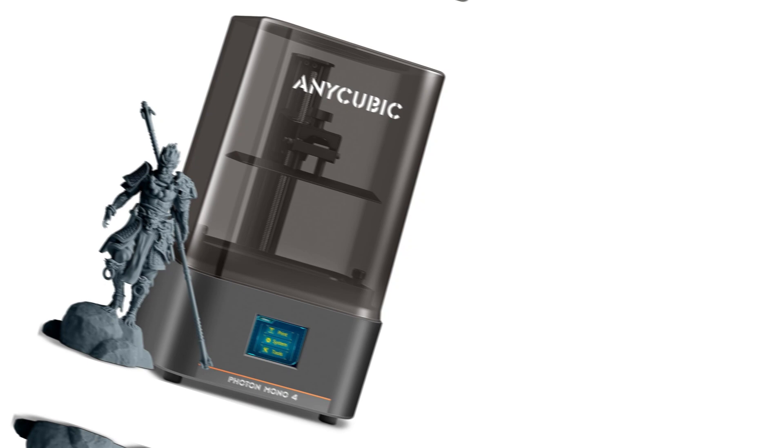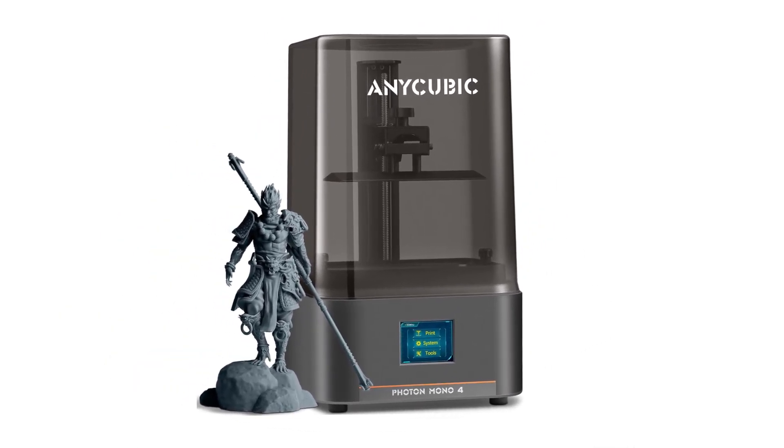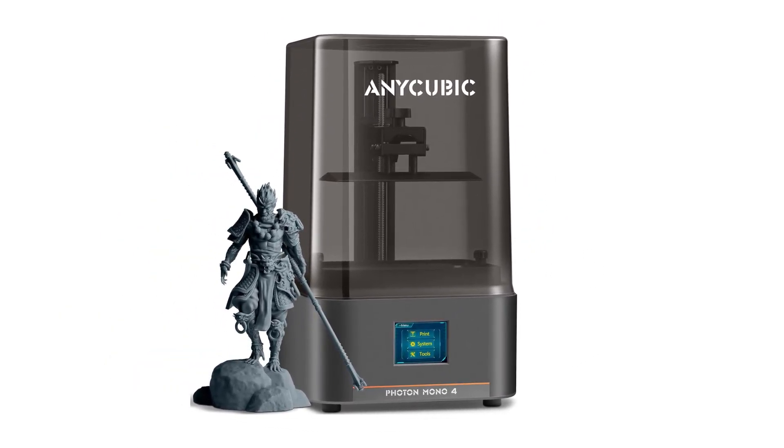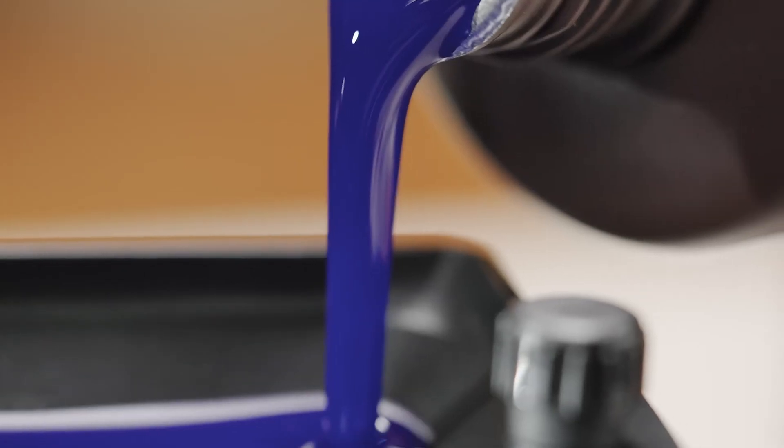The Photon Mono 4 is equipped with Anycubic's trusted light-turbo-matrix light source technology, providing stable, balanced and uniform lighting. This reduces layer lines and rasterization, resulting in ultra-smooth surfaces and maximum print details.